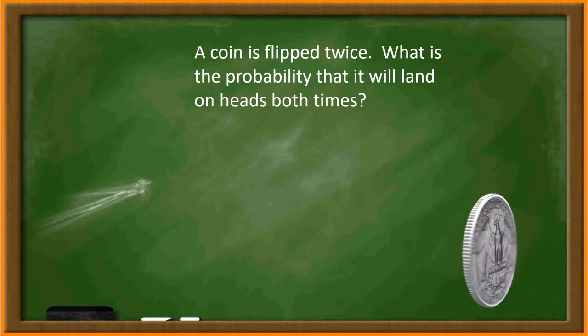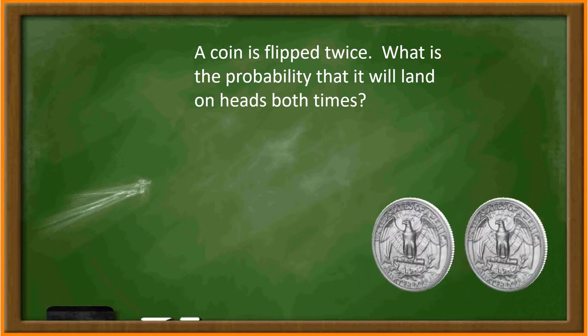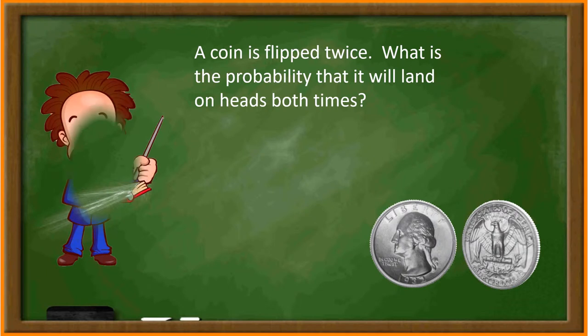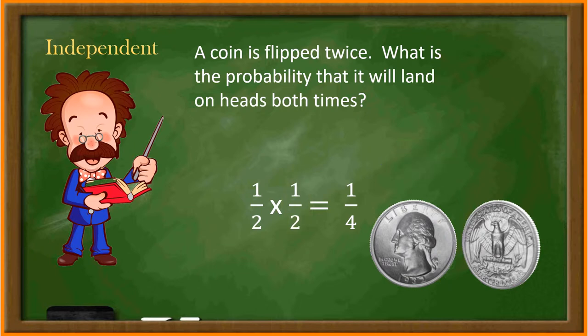A coin is flipped twice. What is the probability that it will land on heads both times? The probability of the coin landing on heads is one out of two because there is only one head out of two choices: heads or tails. Since flipping a coin does not remove the heads or tails option, the probability of the coin landing on heads again the second time is one out of two. So the answer will be one half times one half, which is one fourth.